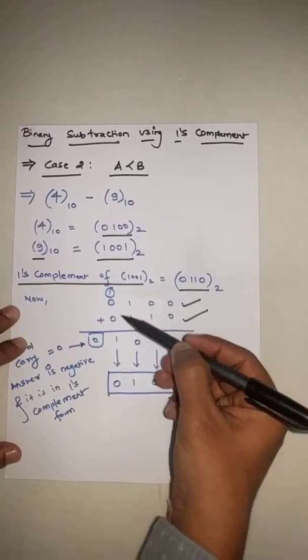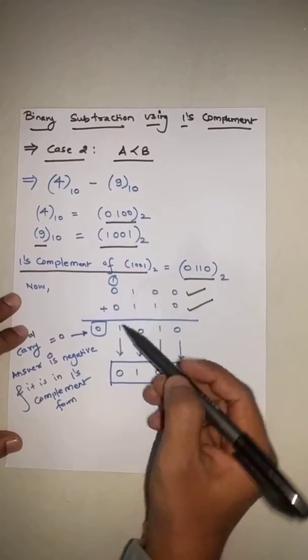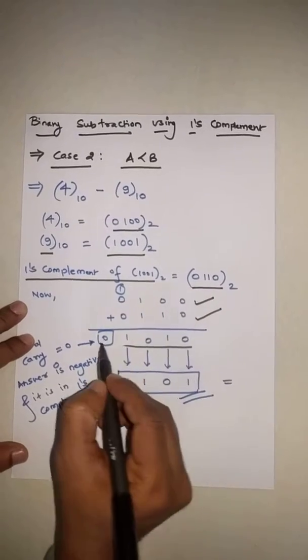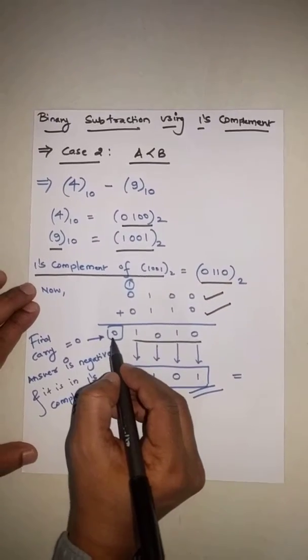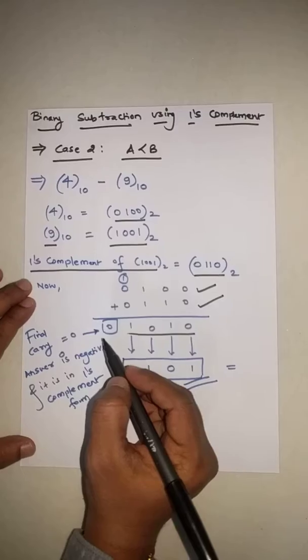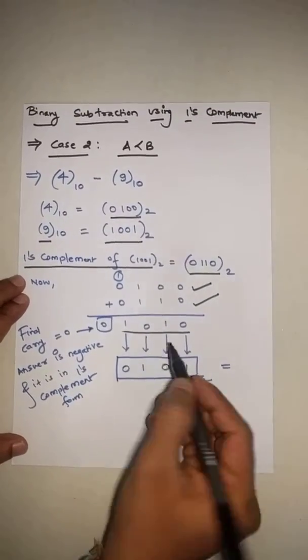Now carry is 0. This indicates the answer is negative and it is not in true form, it is in one's complement form, so we have to convert each and every bit.